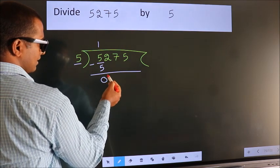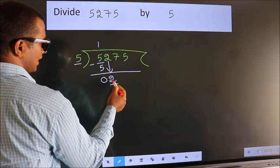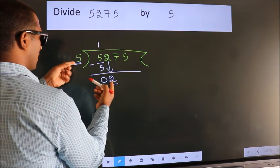After this, bring down the beside number, so 2 comes down. Here we have 2, here 5. 2 is smaller than 5.